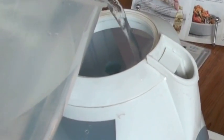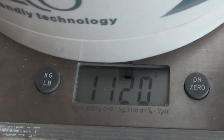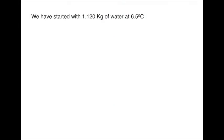That water is then poured into the kettle, which is still on the balance. The digital balance records the extra mass of the water poured in. So our key data so far is that there's 1.12 kilograms of water at 6.5 degrees Celsius.